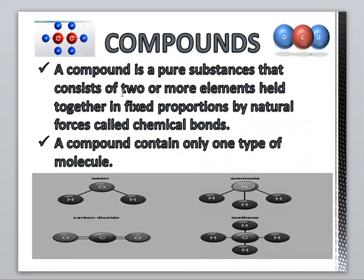A compound is a pure substance that consists of two or more elements held together in fixed proportions by natural forces called chemical bonds. A compound contains only one type of molecule. For example: water molecule, carbon dioxide molecule, ammonia molecule, and methane molecule.